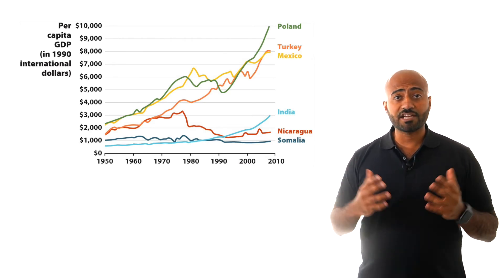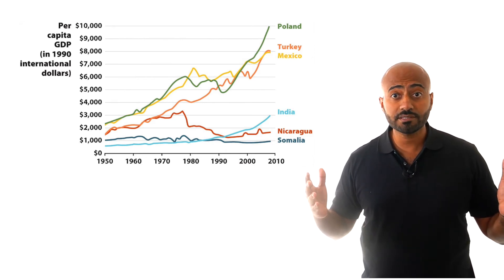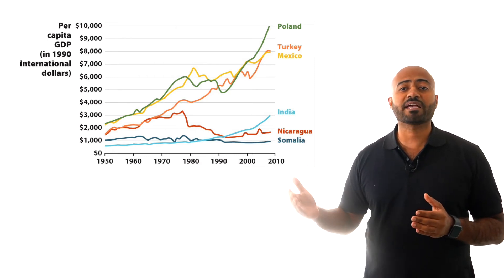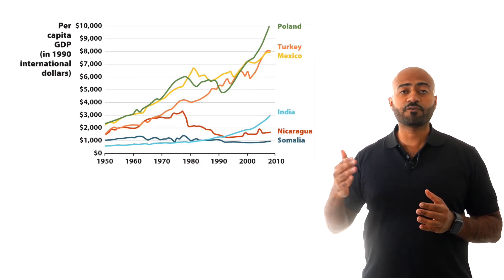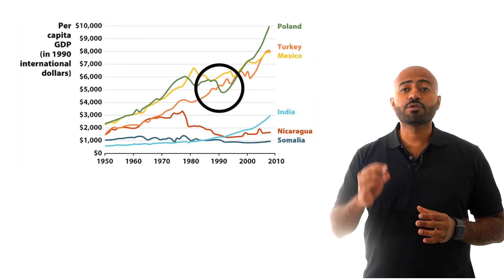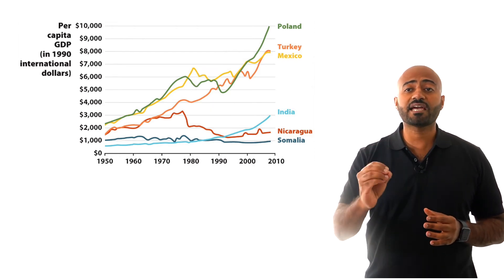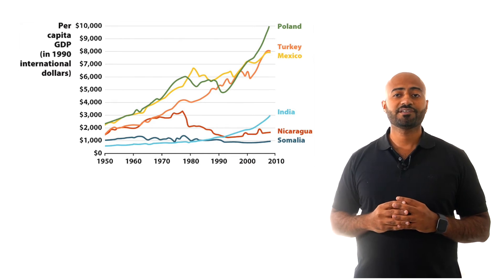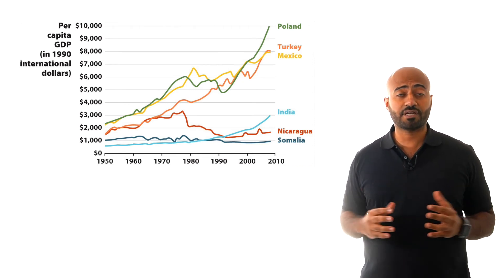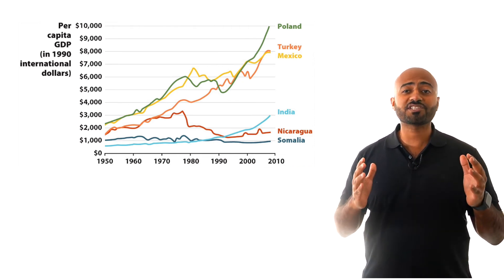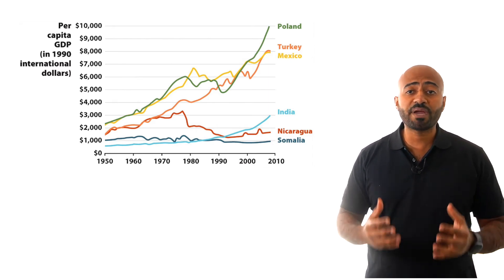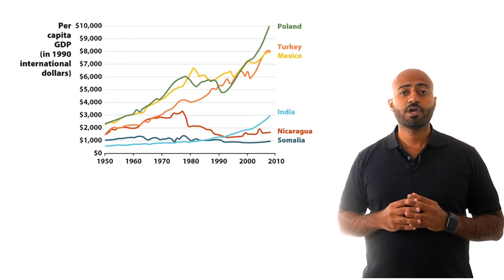Poland also looks interesting. It had a similar growth pattern to Mexico, but right before the 1990s, living standards fell. After 1990, the Polish economy grew faster, and living standards today are much higher than in Mexico and Turkey. What happened in Poland around 1990? This graph opens up a whole world of questions and allows us to compare and contrast economies to learn about history.